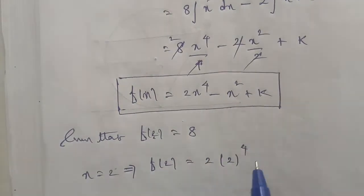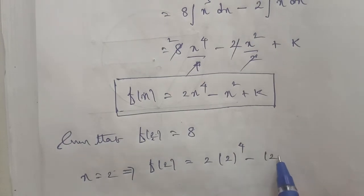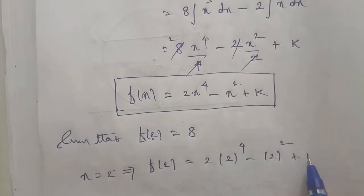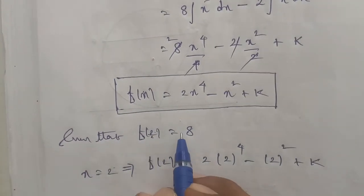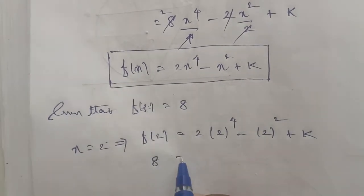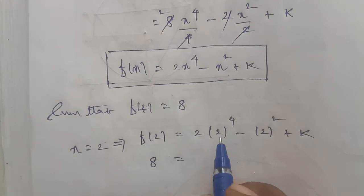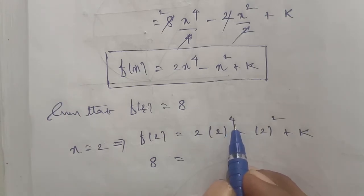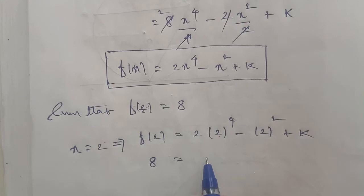Substituting x = 2: 2 times 2⁴ minus 2² plus k. Since 2⁴ equals 16, we get 2 times 16 equals 32, minus 4, plus k.